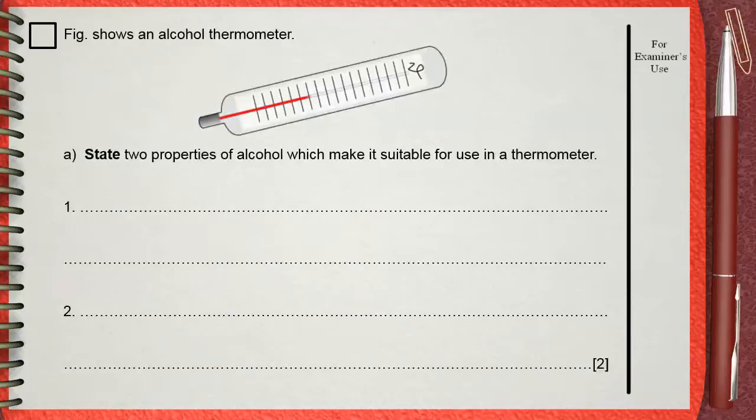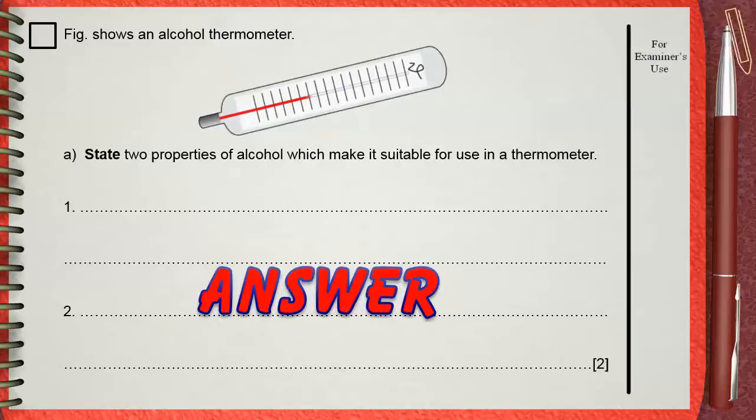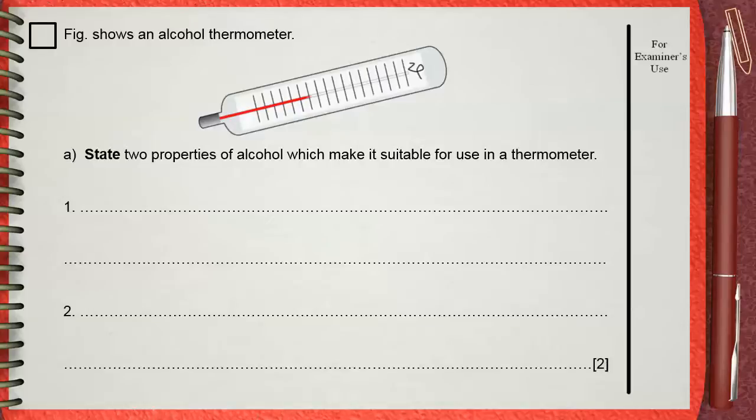The figure shows an alcohol thermometer. State two properties of alcohol which make it suitable for use in a thermometer. The most well-known liquids used in thermometers are mercury and alcohol, and any liquid used in a liquid-in-glass thermometer must have some special properties.